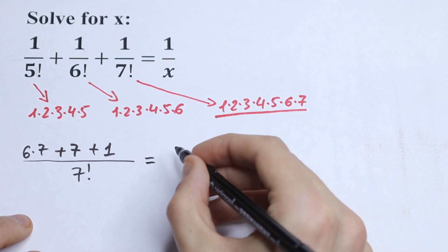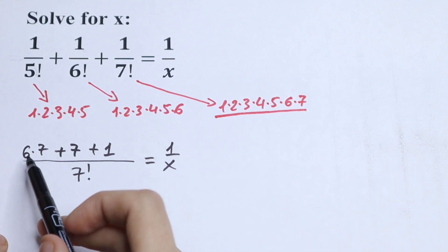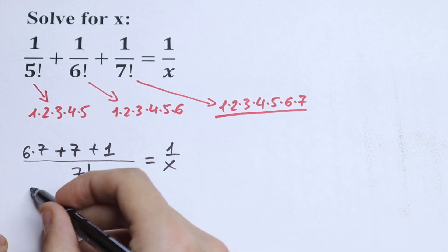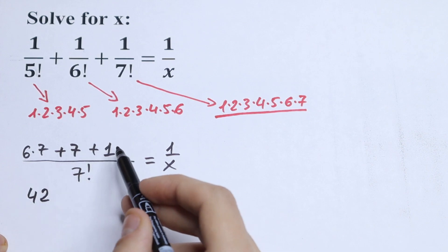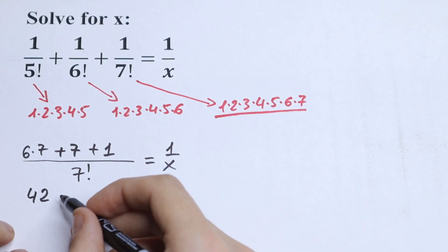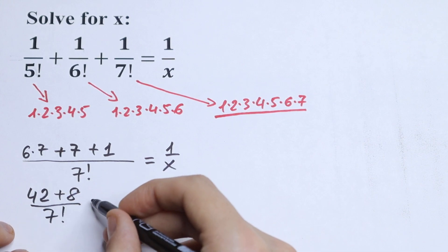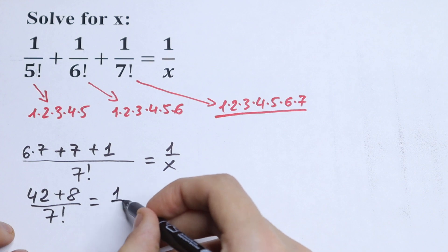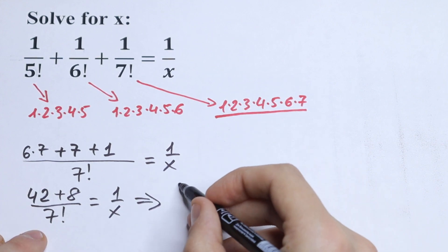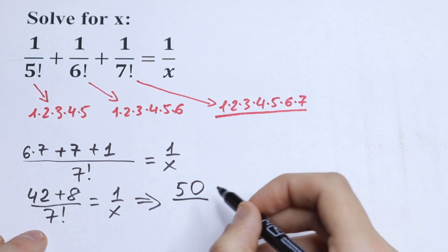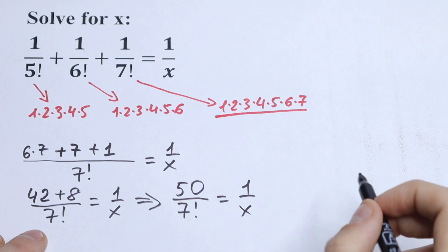So this is our common denominator, and let's simplify this. We will have 6 times 7 is 42, plus 7 plus 1, giving us 50. So we have 50 over 7 factorial equal to 1 over x.